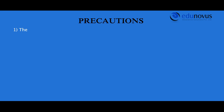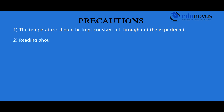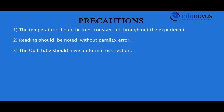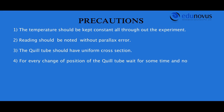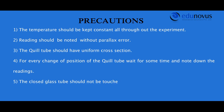Precautions: The temperature should be kept constant throughout the experiment. Readings should be noted without any parallax error. The quill tube should have uniform cross-section. For every change in the position of the quill tube, wait for some time and then note down the readings. The closed glass tube should not be touched with hand.